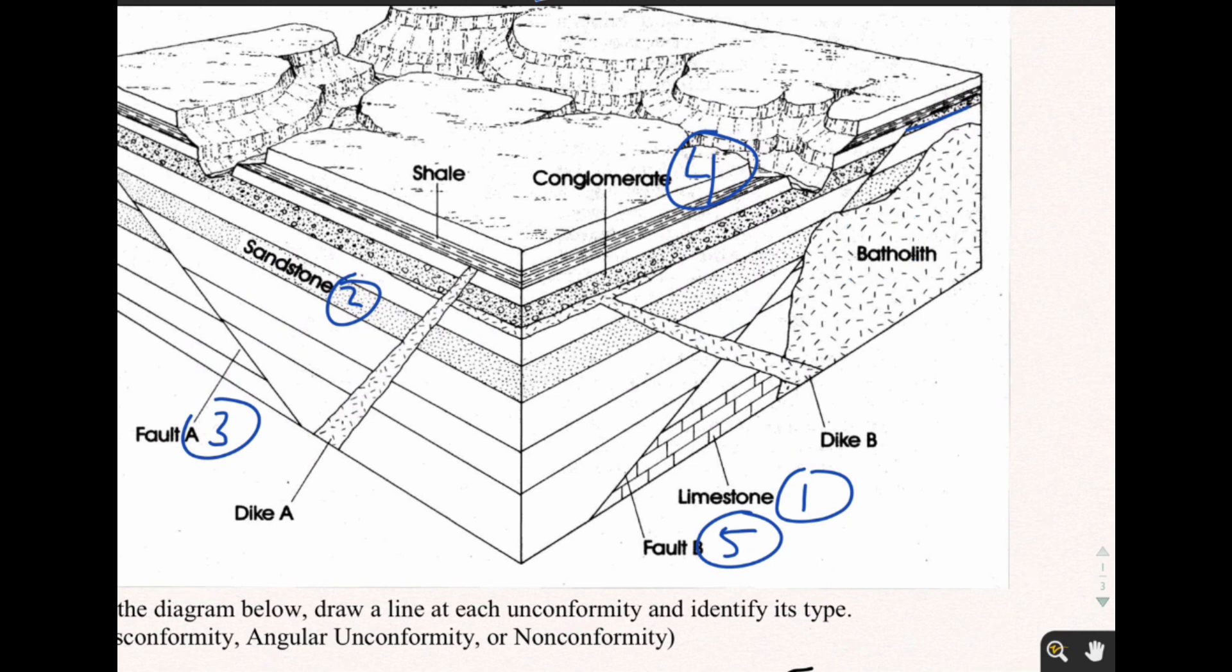Number six is the batholith. Why the batholith? It's the batholith because Dike B goes on top of it and all the same other reasons. Dike A goes on top of Dike B.